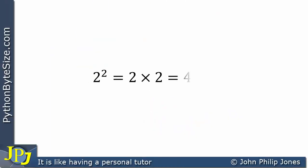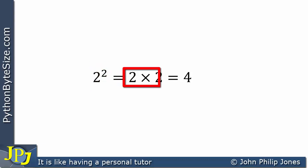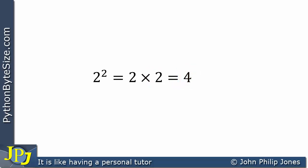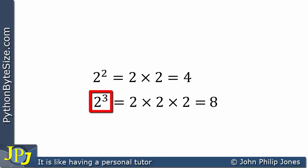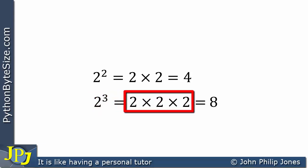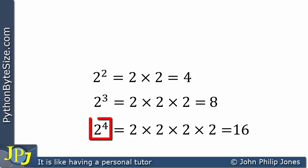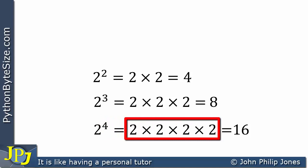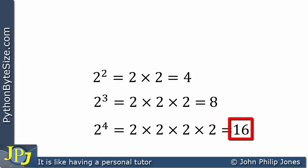Here we can see we have 2 raised to the power of 2. So 2 is the base, and the index is 2, telling us we have 2 lots of 2 multiplied together to give us 4. We can see 2 to the power of 3: the base is 2, the index is 3, giving us three 2s all multiplied together to give 8. Carrying on, 2 to the power of 4 gives us 4 lots of 2s all multiplied together, which gives us 16.